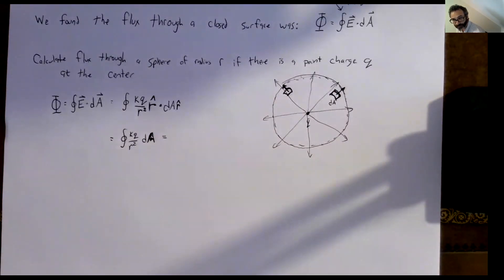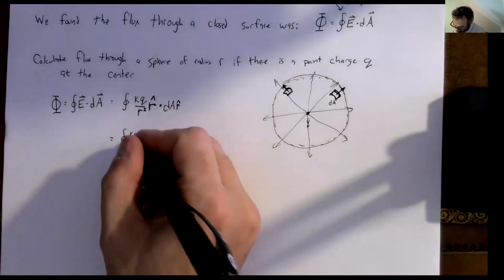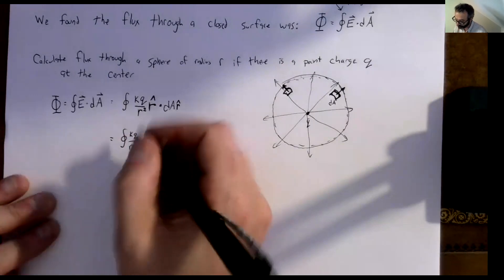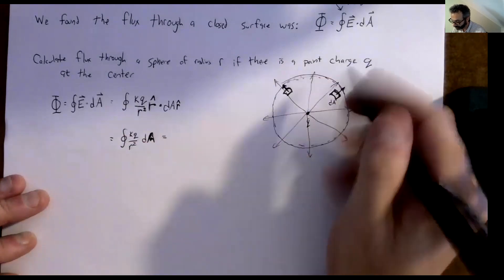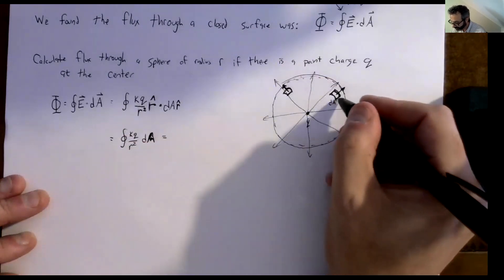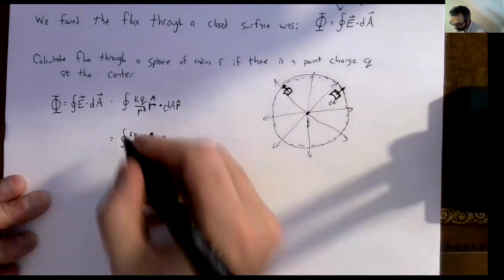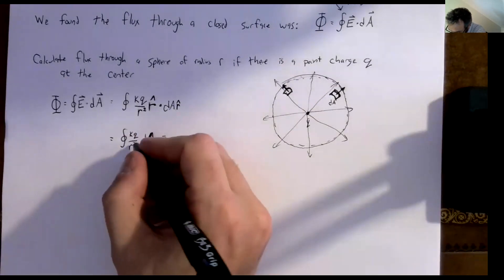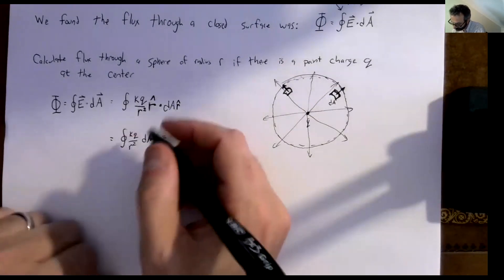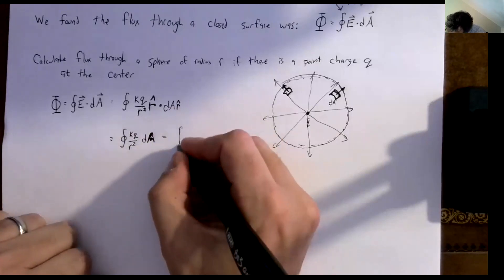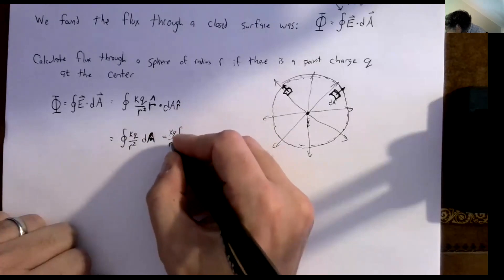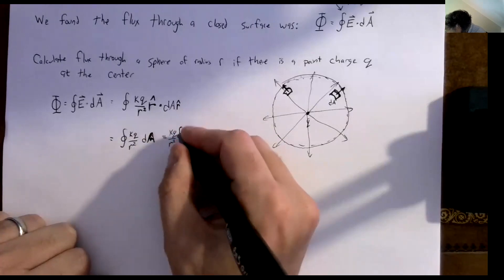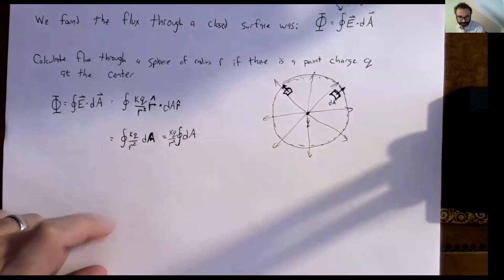The electric field kq over r squared is constant because this sphere is at a constant radius — r is the same everywhere on the sphere. So r is a constant, as well as k and q. So kq over r squared can be pulled out of the integral, and then we just have to do the surface integral over dA.